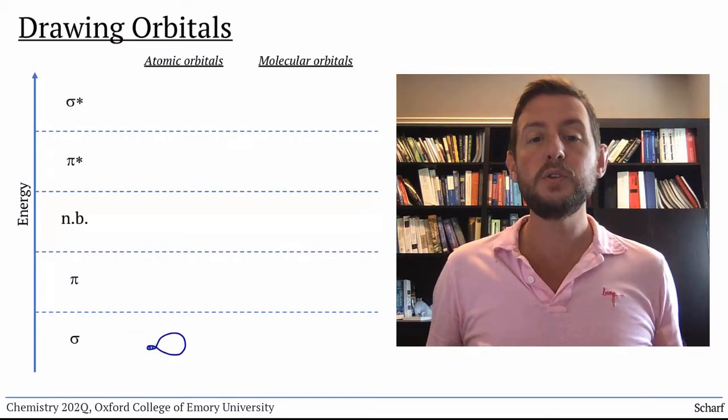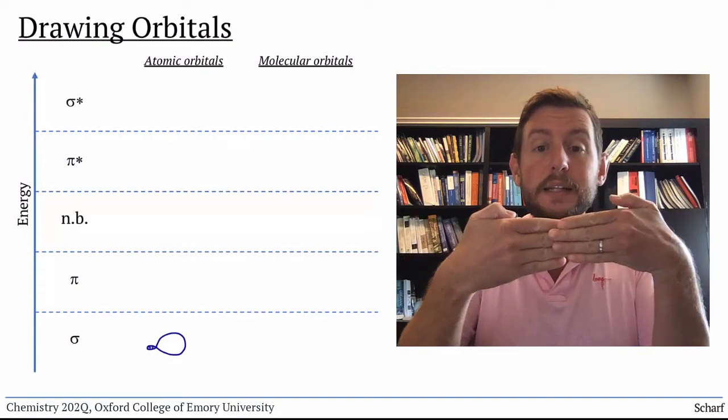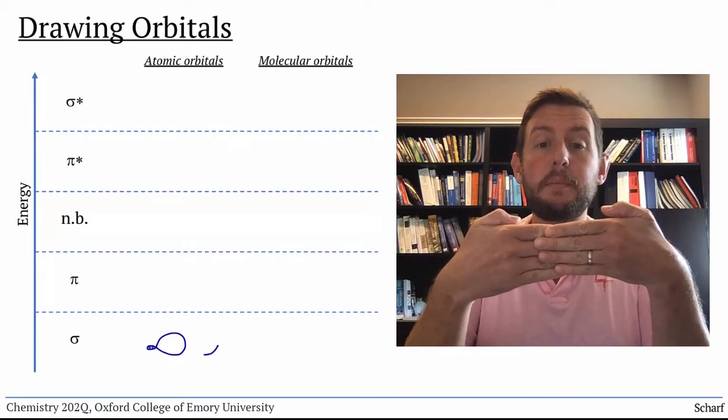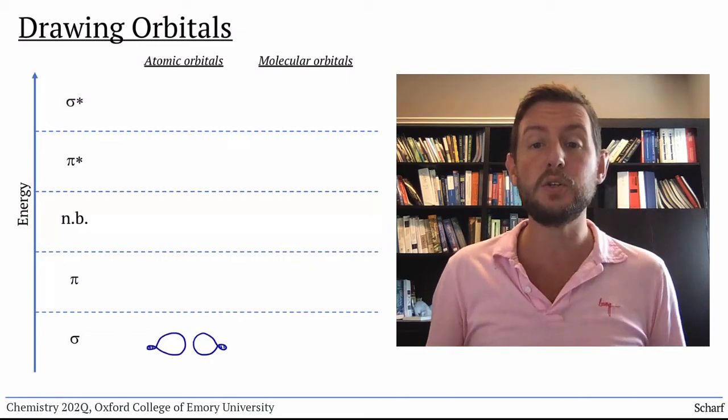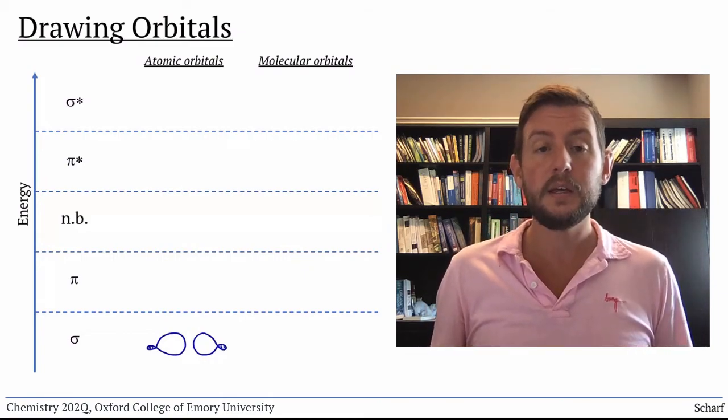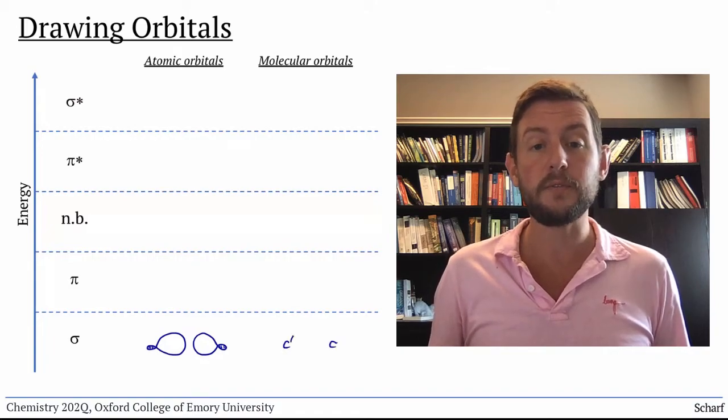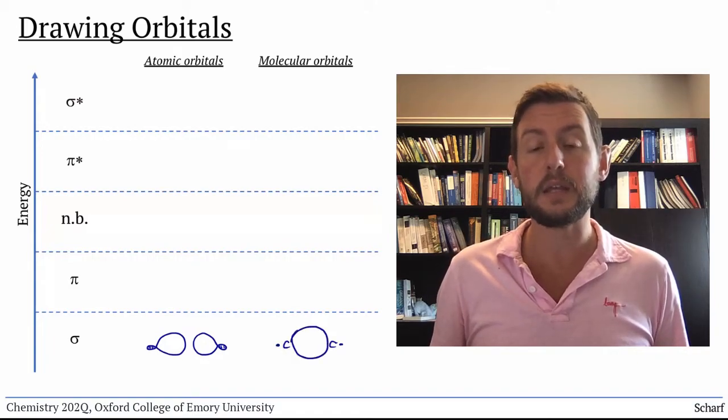When two hybrid orbitals point directly at each other, they constructively overlap to make a new orbital that's largest in between the two nuclei. A CC-sigma-bonding orbital, for instance, we would draw something like this.